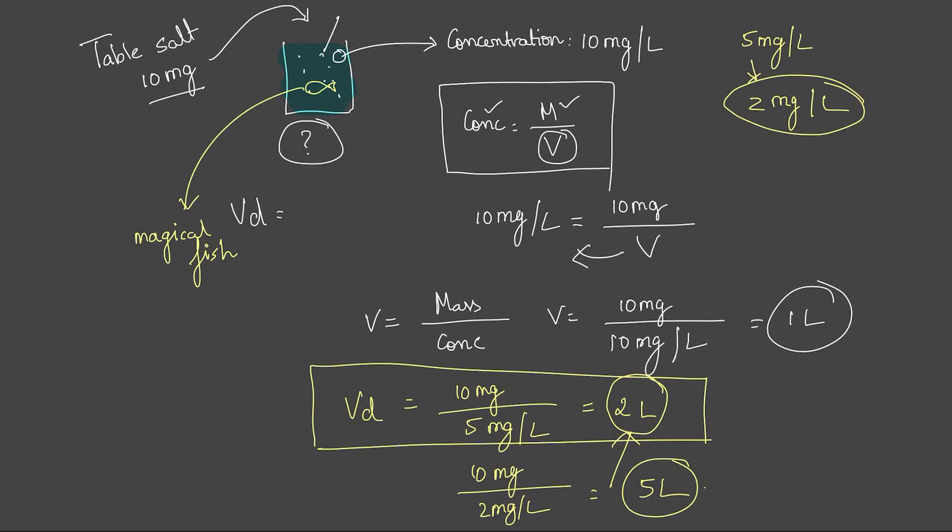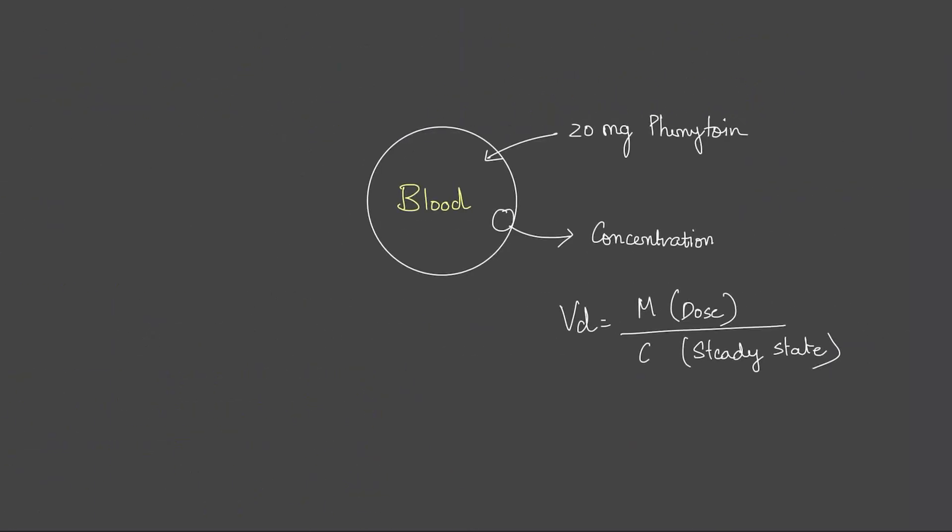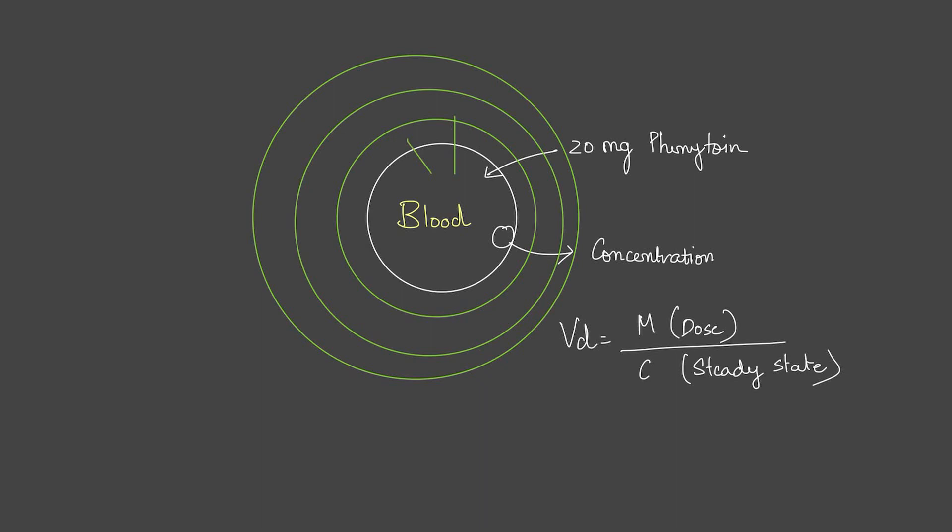So now our concept of volume of distribution has slightly changed. Instead of thinking about the volume of the water, we are talking about how much the fish eats. Now you can apply the same thing in the example of the body as well, because we know that the blood is not intact. It's going to go to various other compartments in the body. The body has various other compartments, the interstitial space, the intracellular space, the extracellular space, and things like that.